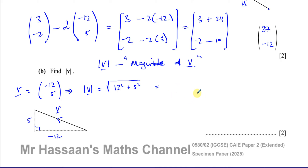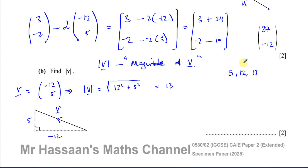Because this is a non-calculator paper, knowing Pythagorean triples is very useful. Pythagorean triples are sets of integers where the sum of the squares of the two smaller numbers equals the square of the larger. I know the answer is 13 because 5, 12, 13 is a Pythagorean triple: 5 squared plus 12 squared = 25 + 144 = 169, and the square root of 169 is 13.